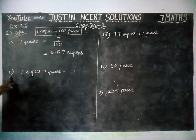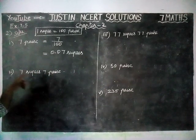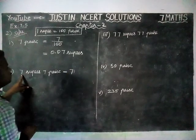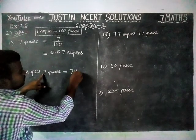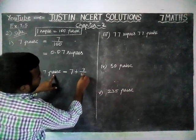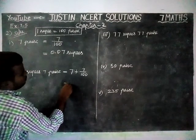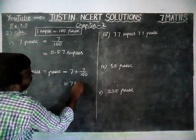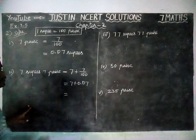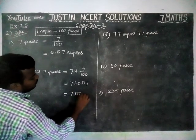Next, second question: 7 rupees 7 paise. Here, 7 rupees is already in rupees, so no problem — this can be written as 7. Then, plus 7 paise divided by 100. The same thing, 7 by 100 can be written as 0.07. So, 7 plus 0.07 is equal to 7.07 rupees.